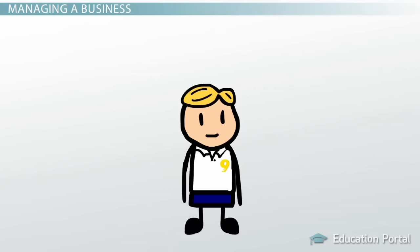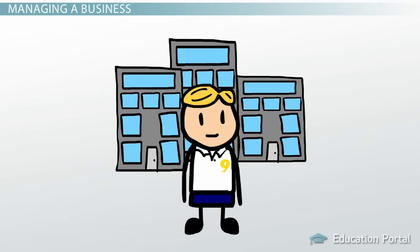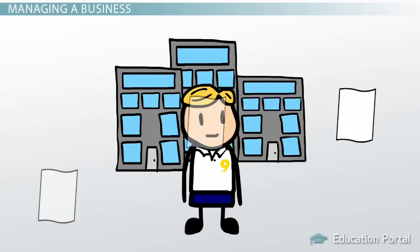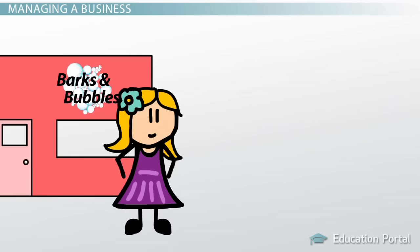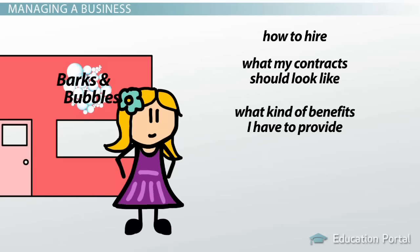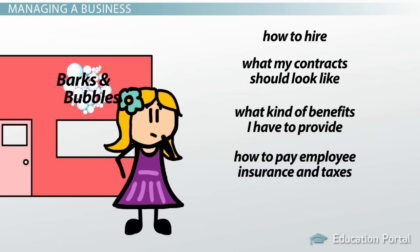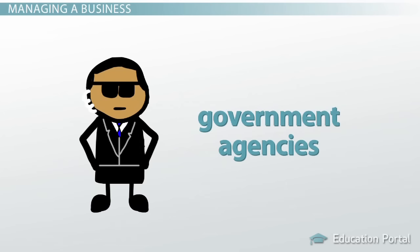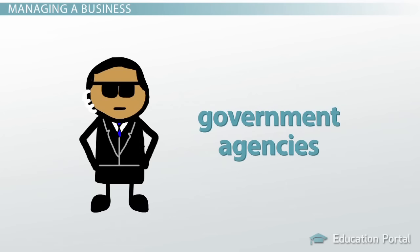There are many laws that concern managing a business, because there are many aspects involved in managing. Running a business will involve a lot of employment law and contract law. For my new business, I'll need to know how to hire, what my contract should look like, what kind of benefits I have to provide, how to pay employee insurance and taxes, and even how to properly fire an employee. Many of these employment and benefit laws are federal laws and regulated by government agencies. For example, the Equal Employment Opportunity Commission is a federal agency that enforces employment discrimination laws.